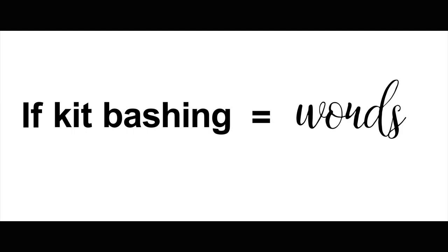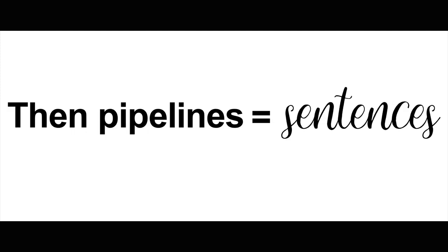If kitbashing is like words, then pipelines are like sentences. It's kind of like photo bashing 2.0. With photo bashing, all you're doing is mixing photos together. In kitbashing, you're mixing together everything you can think of, which typically involves rendering engines and 3D suites. A pipeline is just the order in which you use the suites to get the desired look you want in your finished piece.